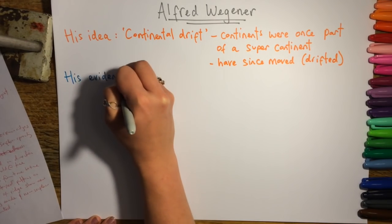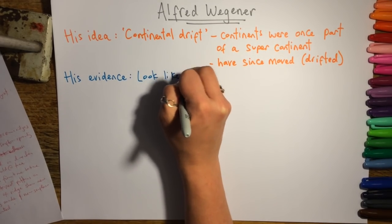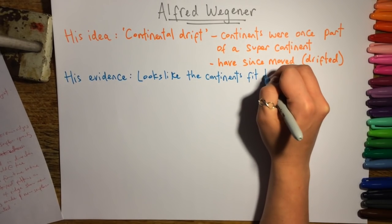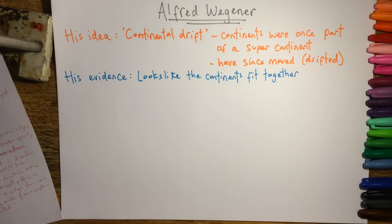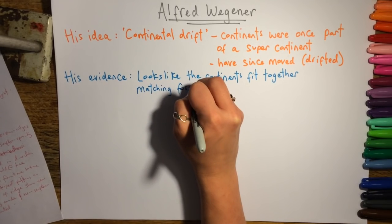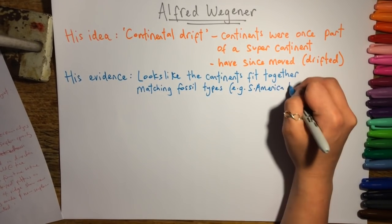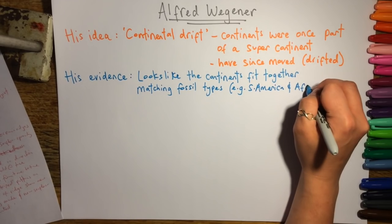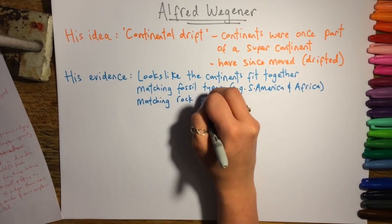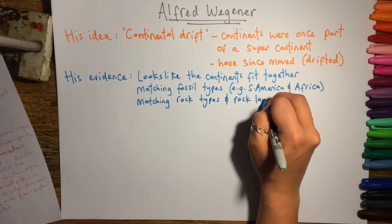The evidence for his idea was three main things. One is that the countries look like they fit together — if you look at an atlas, it looks like they're bits of a jigsaw that have been pulled apart. The second is that there were fossil types that matched, particularly on the east coast of South America and the west coast of Africa. And also that there were rock types and layers in the rock that matched on those continents.